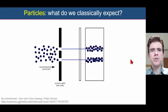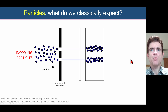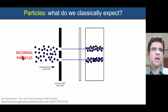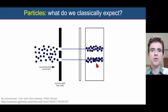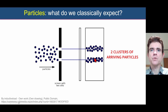Now what happens if we consider particles? Well, classically, if we aimed a number of particles at a barrier — a screen with two slits — then we might expect two clusters of particles being detected on the right-hand side of that barrier.